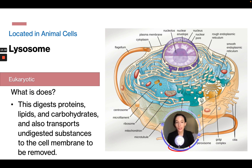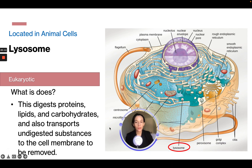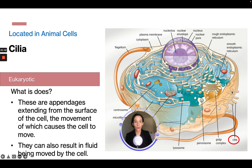Also in animal eukaryotic cells is the lysosome, which digests proteins, lipids, and carbohydrates, and transports undigested substances to the cell membrane to be removed. Cilia are appendages that extend from the surface of animal eukaryotic cells; their movement causes the cell to move or results in fluid being moved past the cell — these short finger-like structures create movement.